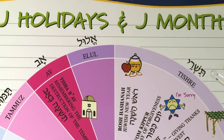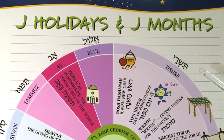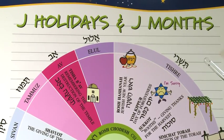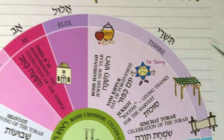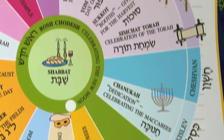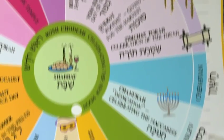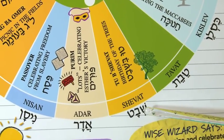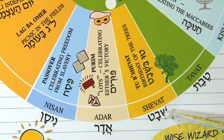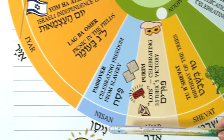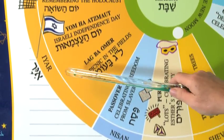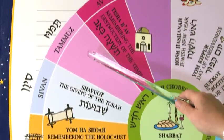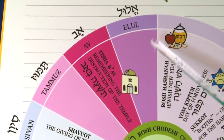We have a great song that we made up in our school, Hebrew Wizards, and it goes something like this: Tishrei, Cheshvan, Tishrei, Cheshvan, Kislev, Tevet, Kislev, Tevet, Shvat, Adar, Shvat, Adar — Driving in my Nissan, to the ER, with my friends Sivan, Tammuz, Av, and Elul.